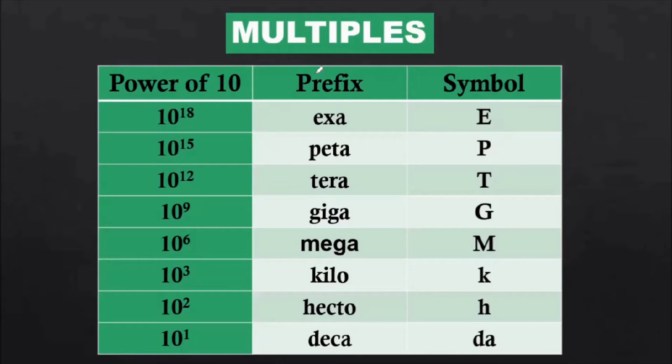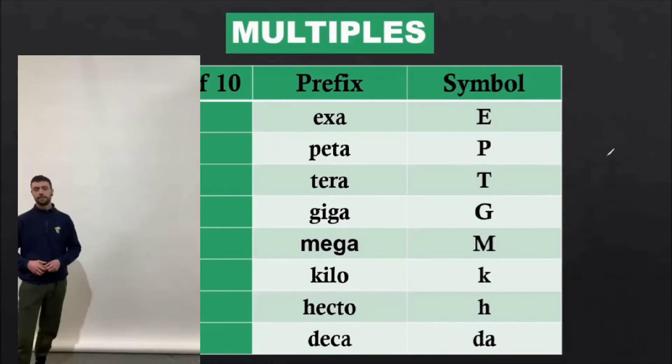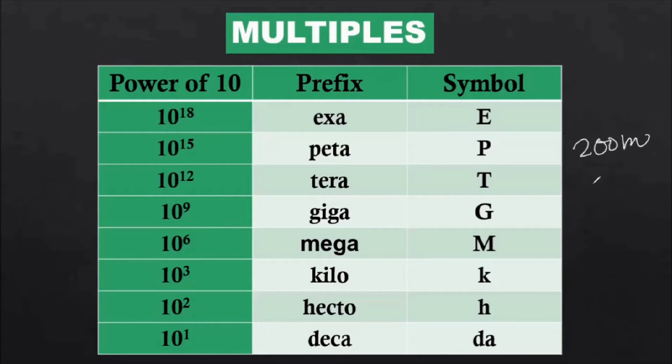I'll give you just an example. Suppose you have measured a distance and the distance is 200 meters. Now this 200 meters can be written as 2 into 10 power 2. 10 power 2 is 100, 2 into 100 is 200 meters. So now from this table, if you see hecto here, its power is 10 power 2, hence you can write it as 2 hectometers.